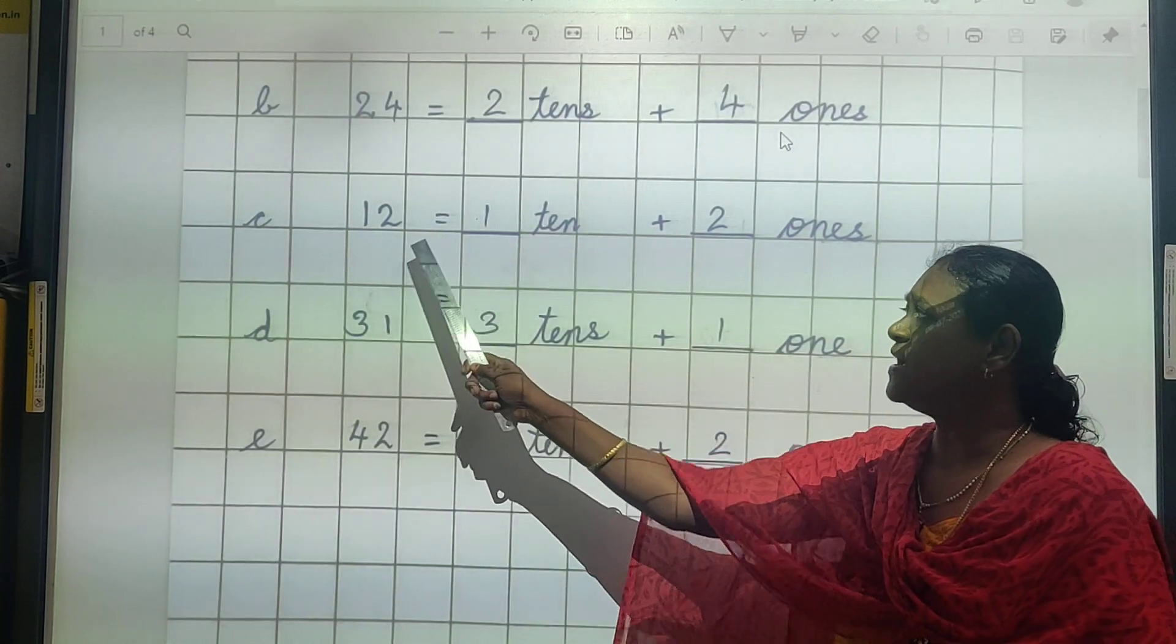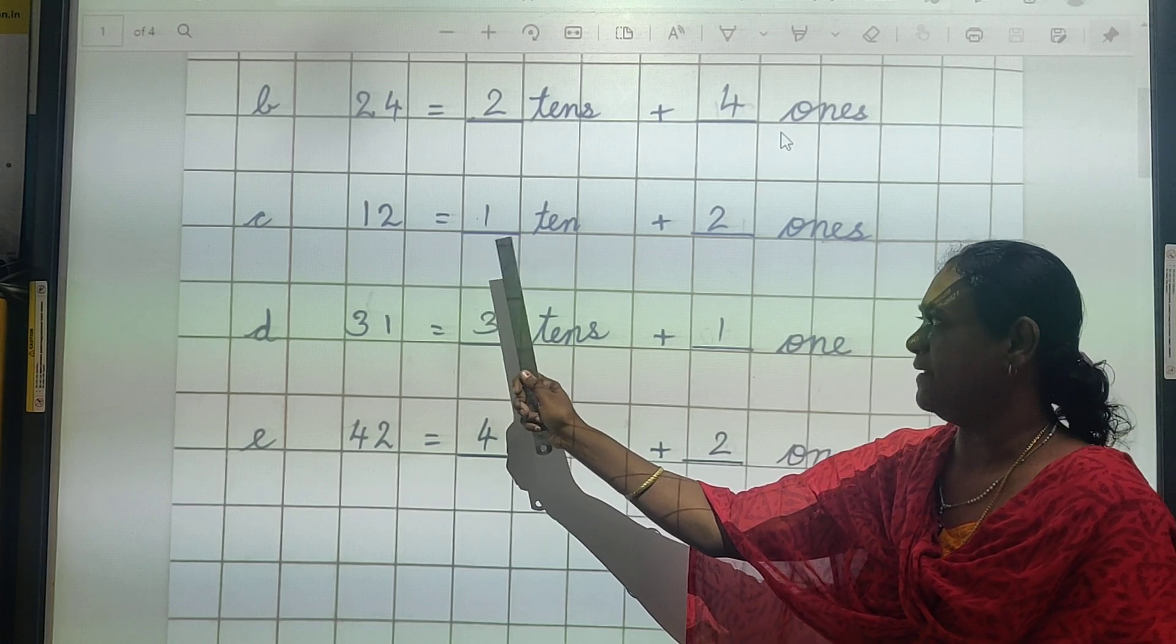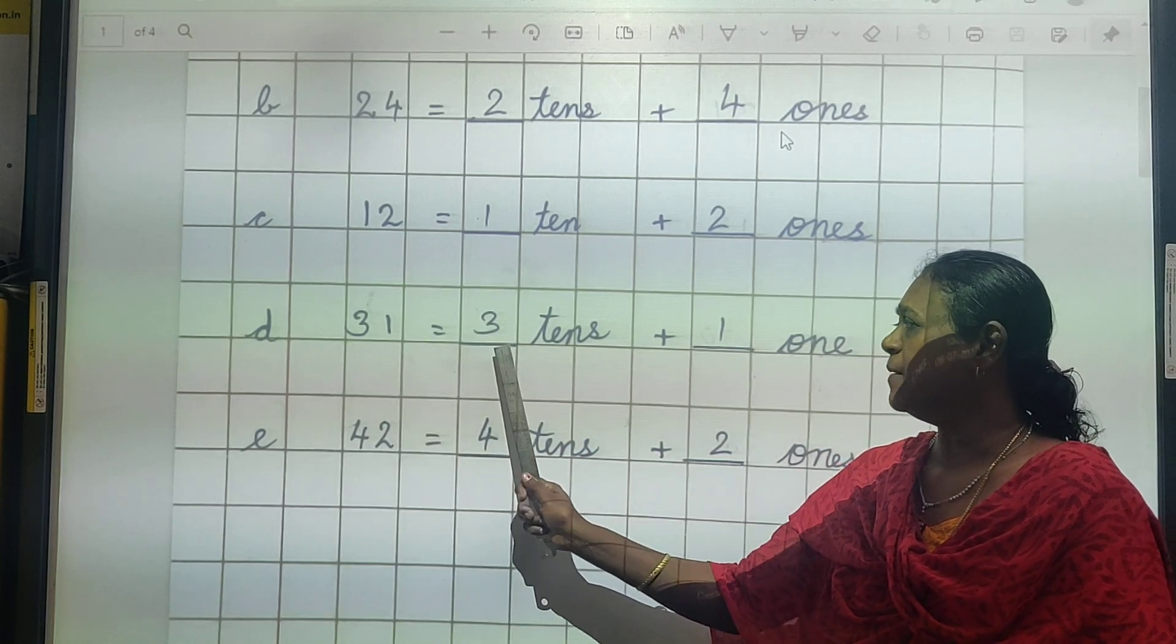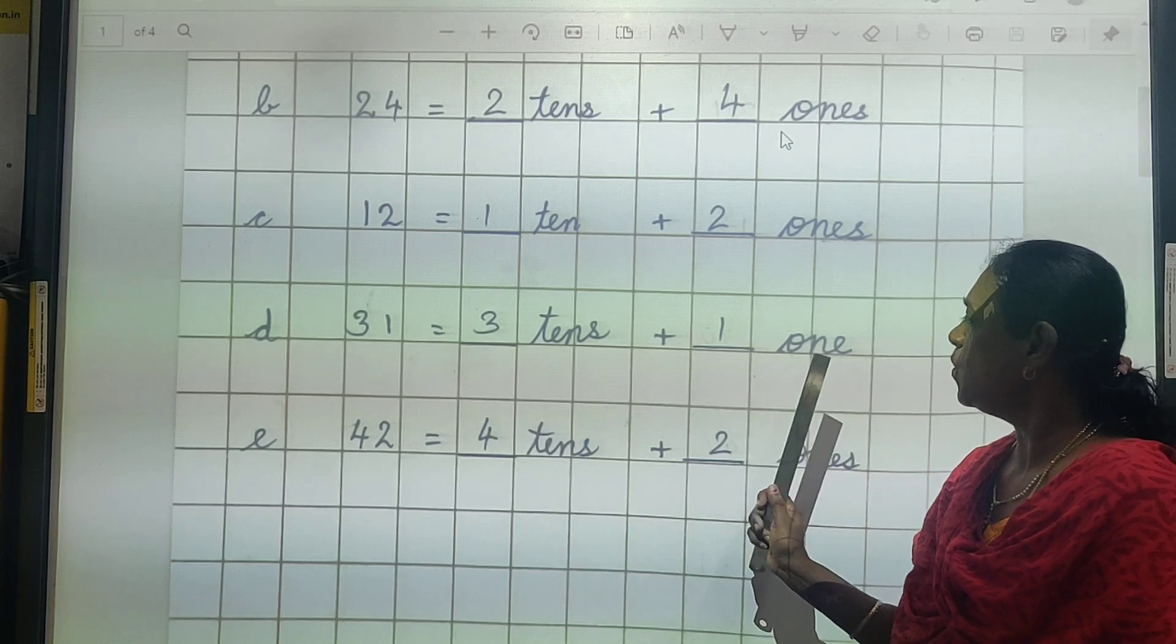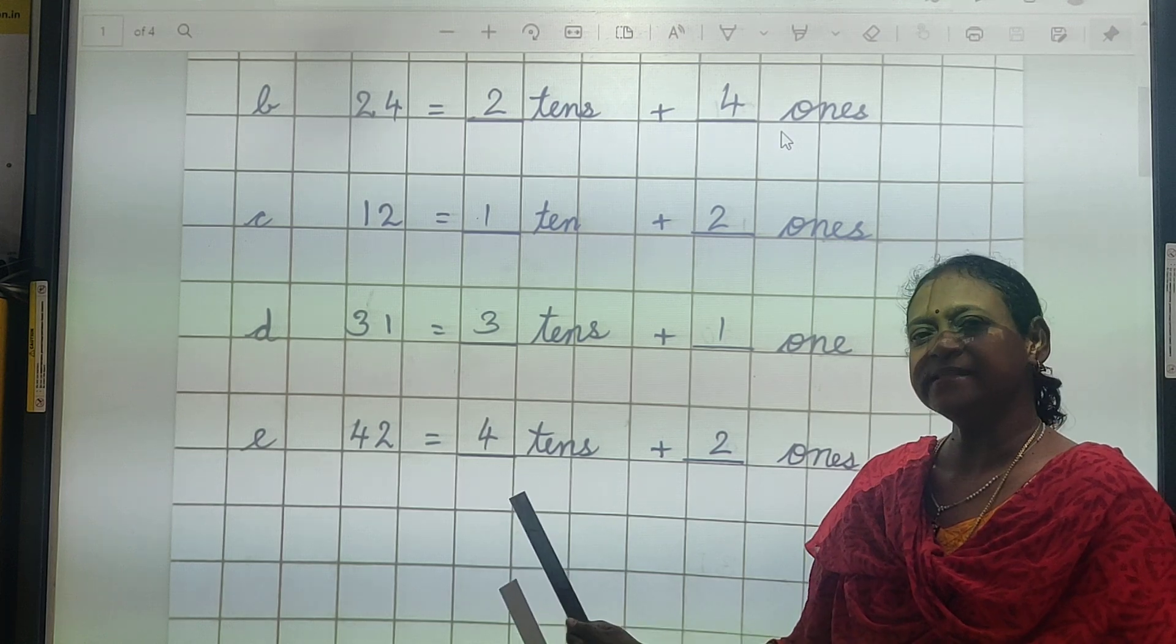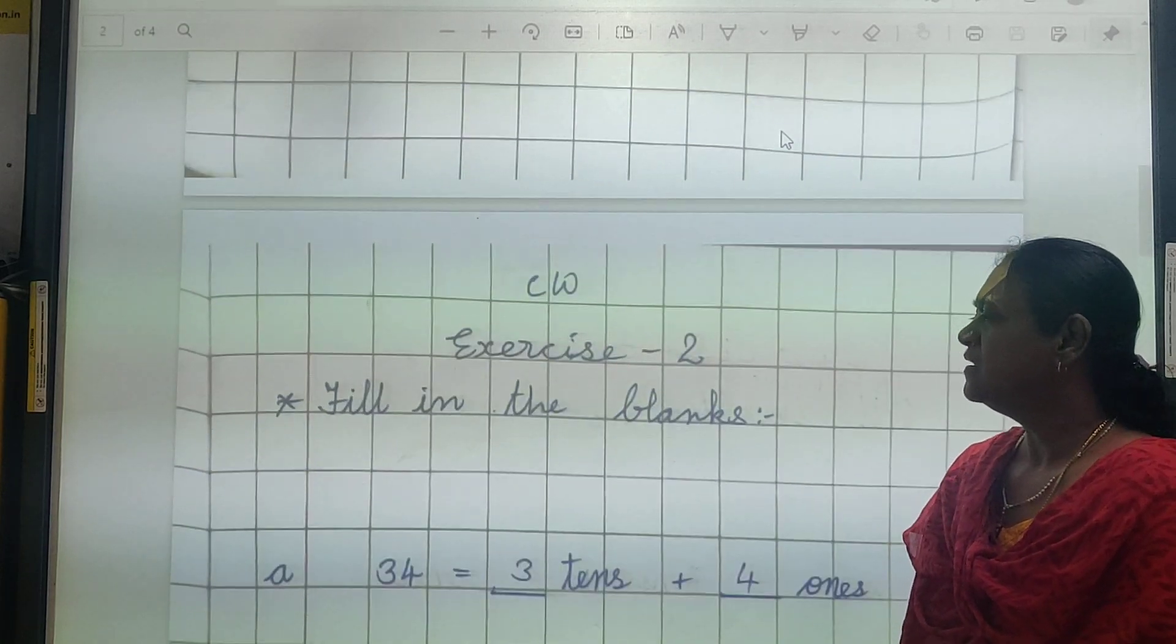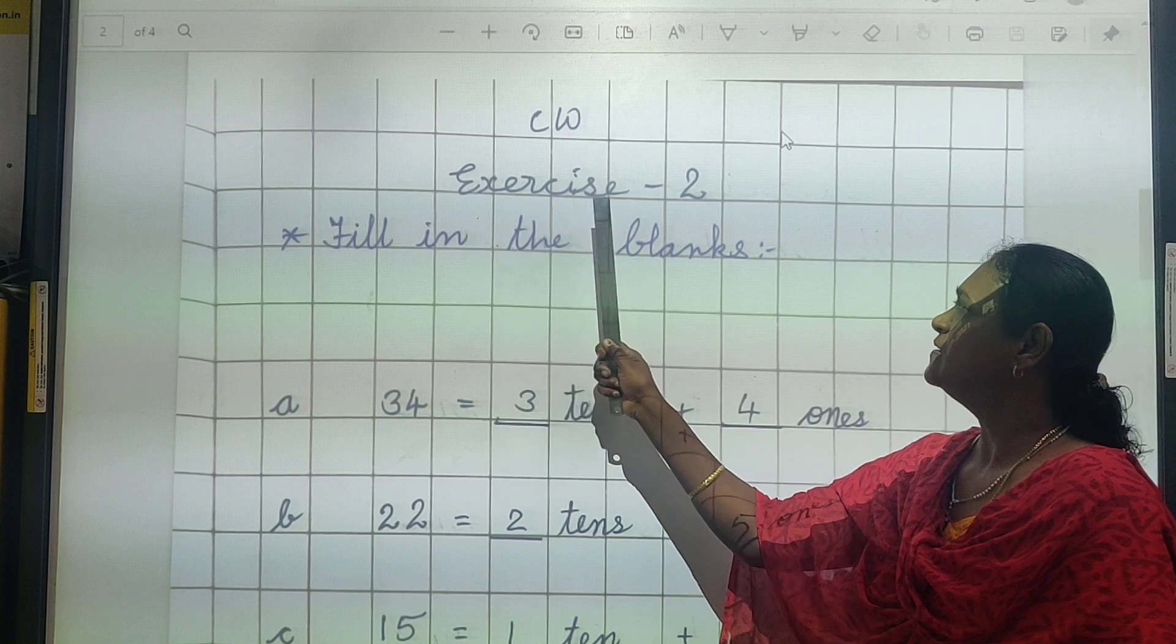Now this is 1, 2, so here 1, right? And here 2. 31, so here 3. Okay, tens 3 and ones how many? Tens 4 and ones 2. Okay, this is your first exercise.